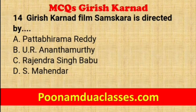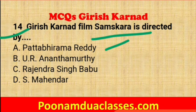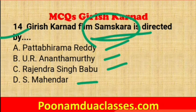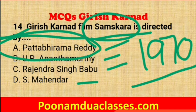Question number fourteen: Girish Karnad's film Samskara was directed by which director — Pattabhirama Reddy, U.R. Ananthamurthy, Rajendra Singh Babu, or S. Mahendra? His film Samskara, released in 1970 and his screen debut, was directed by option A — Pattabhirama Reddy. Both the screenwriting and acting debut were done by the legendary Girish Karnad in this film.